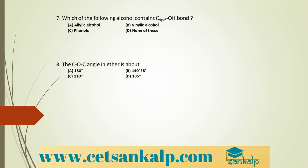Ethyl alcohol (CH3CH2OH) on oxidation with K2Cr2O7 — a strong oxidizing agent — gives acetic acid, a carboxylic acid with the same number of carbon atoms.